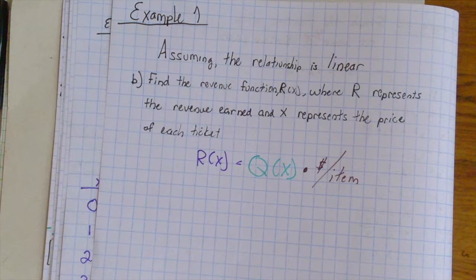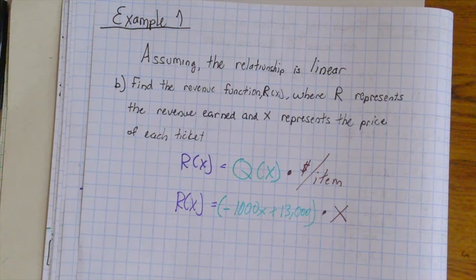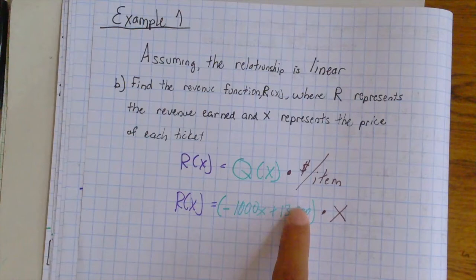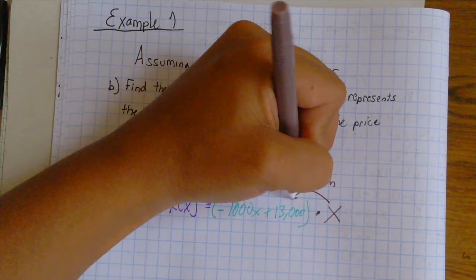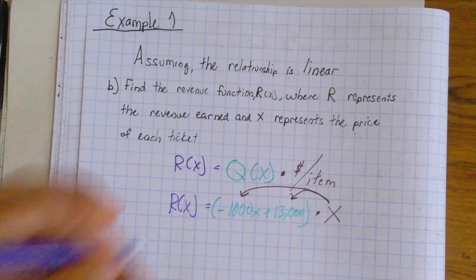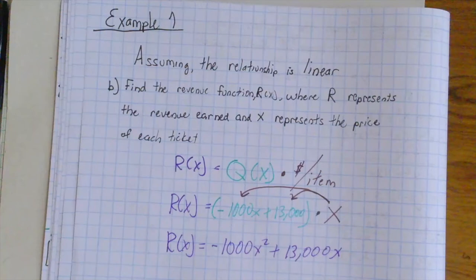R(x) equals that quantity function we just solved for, negative 1,000x plus 13,000, multiplied by the amount of cost per each ticket, which we do not know, so we leave it as x. Now, we can distribute this x value, which simplifies the equation, in which we get negative 1,000x squared plus 13,000x.